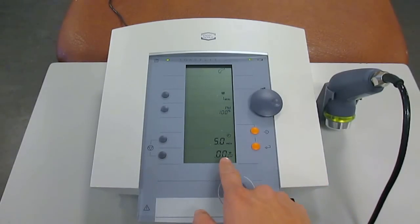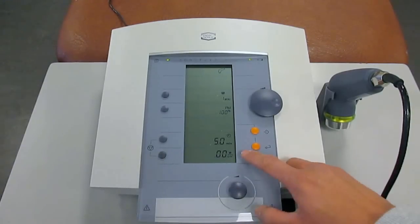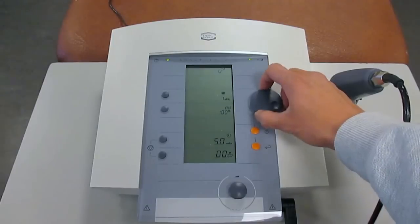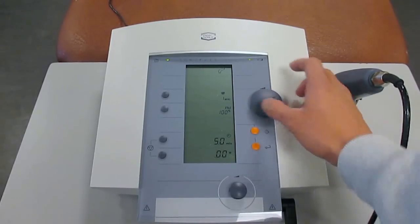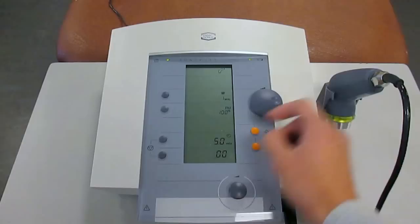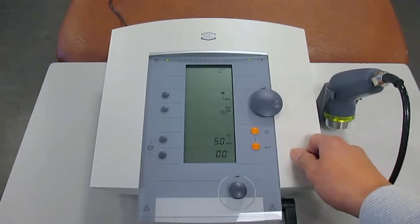For the ultrasound intensity setting, there are two units of measurement that you can use. One is the commonly used watts per centimeter squared, and that is recommended for treatment because it's much more controllable. However, there is an option for you to change that into just simply watts. For us, we would want to choose watts per centimeter squared.